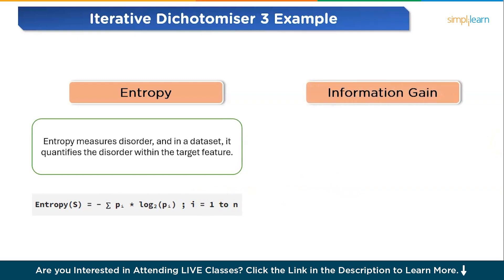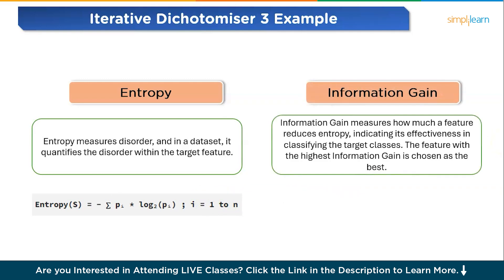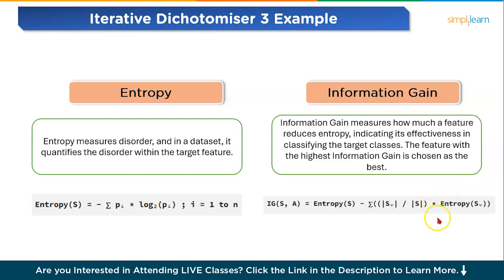The second factor is information gain. Information gain measures how much a feature reduces entropy, indicating its effectiveness in classifying the target classes. The feature with the highest information gain is chosen as the best. In the formula, SV is the set of rows in S for which feature column A has value V, |SV| is the number of rows in SV, and |S| is the number of rows in S.